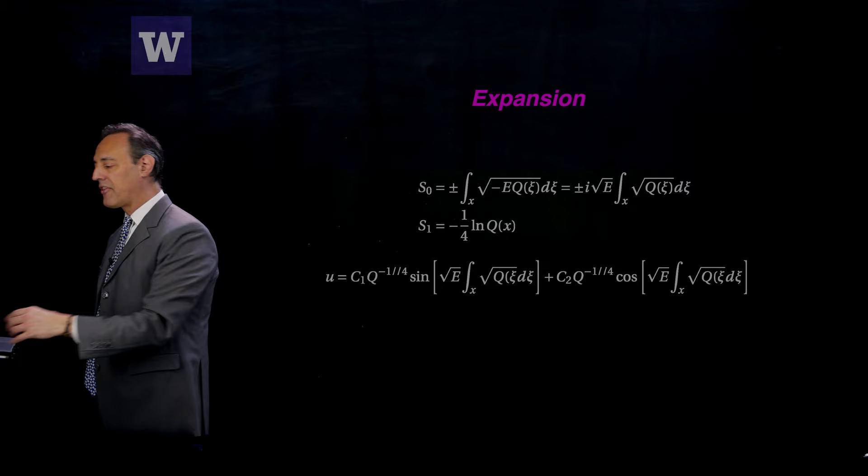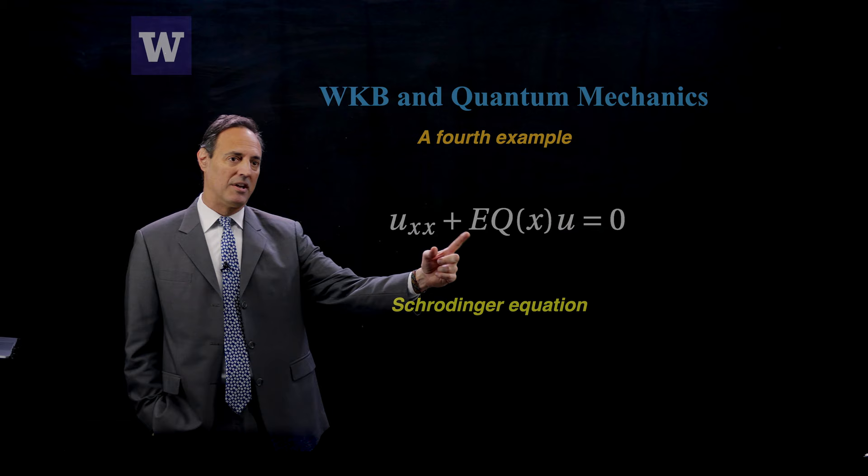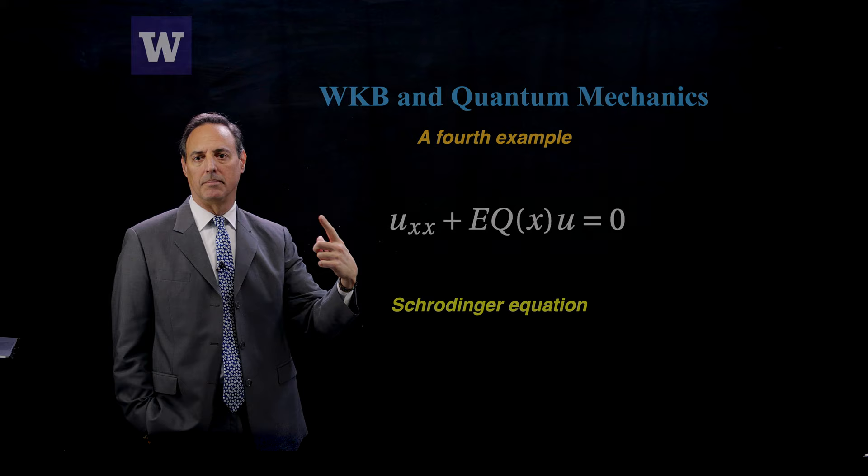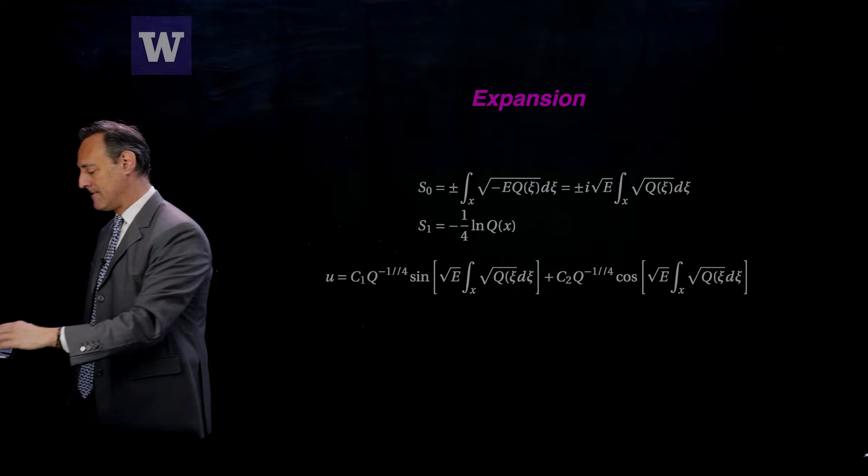So one way to think about it is I'm looking at when, in the quantum mechanics scenario, this energy E is going to be big. So if I divide by E, it's like having an epsilon squared in front of this UXX. That's exactly the asymptotic limit. So the large E limit, which means fast oscillations here, because you can see it's sine of square root E. So that's a frequency. And so if E is large, it's going to be a very fast oscillation.